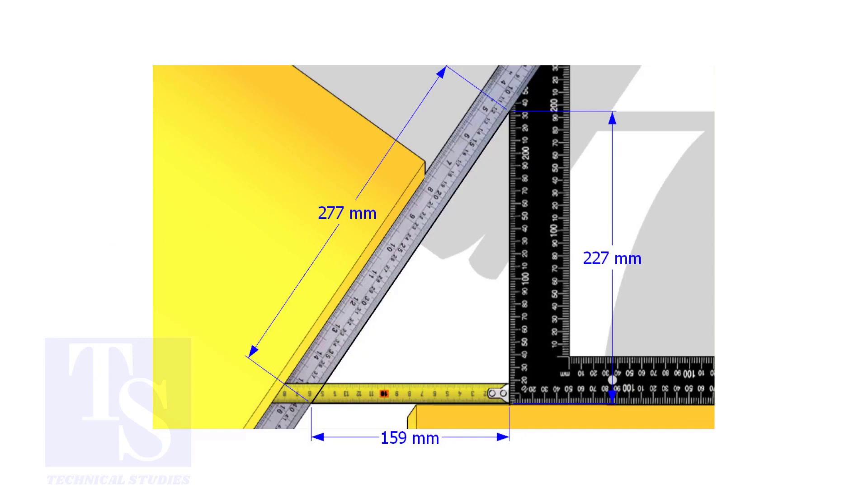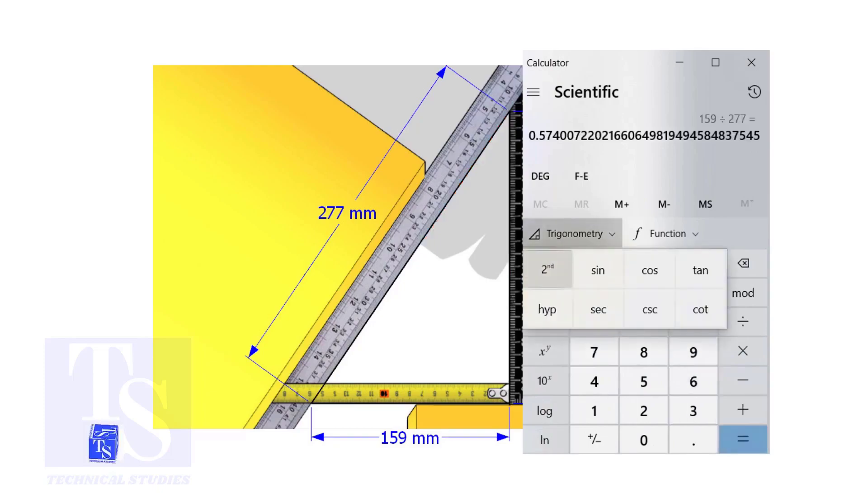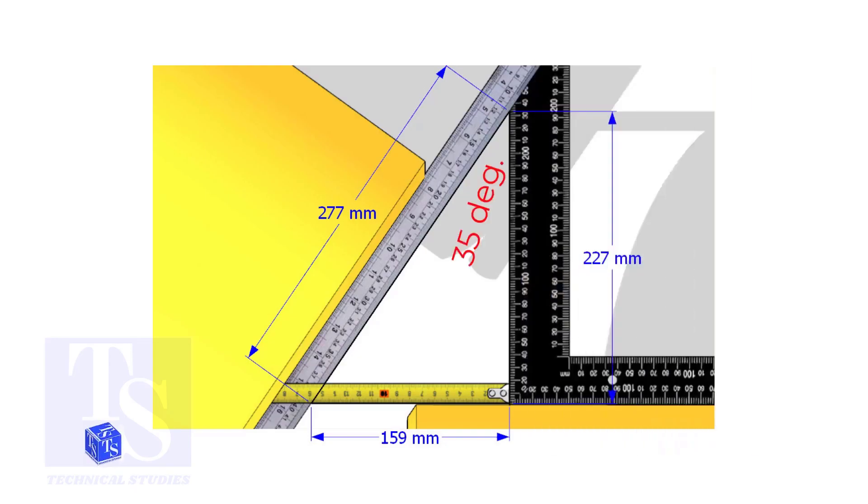Let us calculate the included angle. If you apply the sine rule, the angle will be 159 divided by 277, shift sign. So the answer is 35 degrees.